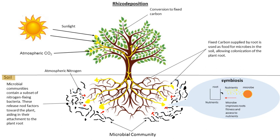Mycorrhizae include a broad variety of root-fungi interactions characterized by mode of colonization. Essentially all plants form mycorrhizal associations, and there is evidence that some mycorrhizae transport carbon and other nutrients not just from soil to plant, but also between different plants in a landscape. The main groups include ectomycorrhizae, arbuscular mycorrhizae, ericoid mycorrhizae, orchid mycorrhizae, and monotropoid mycorrhizae.